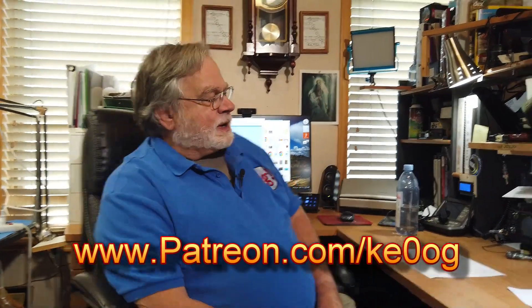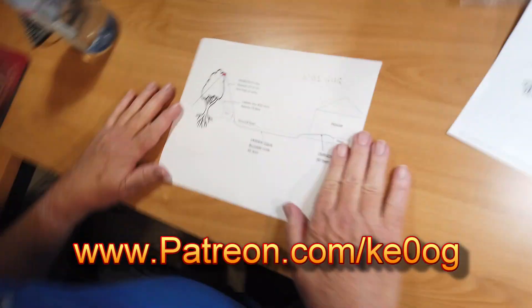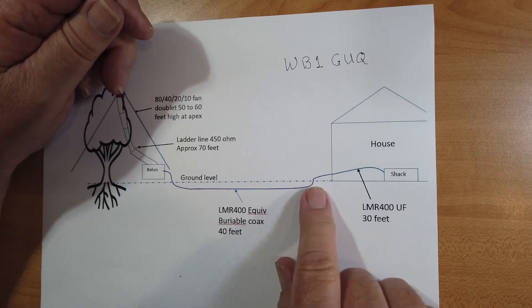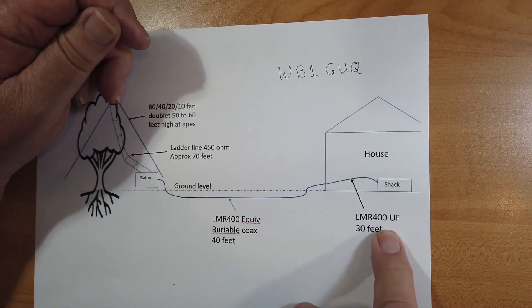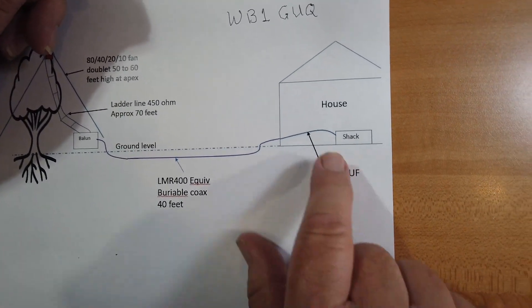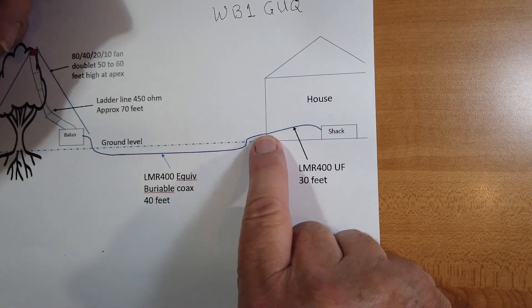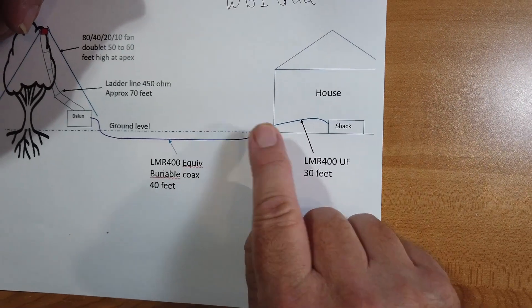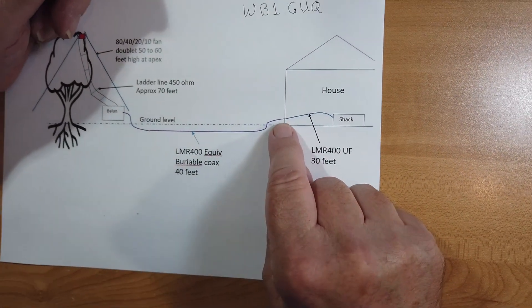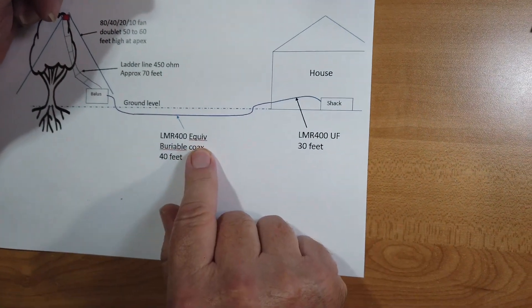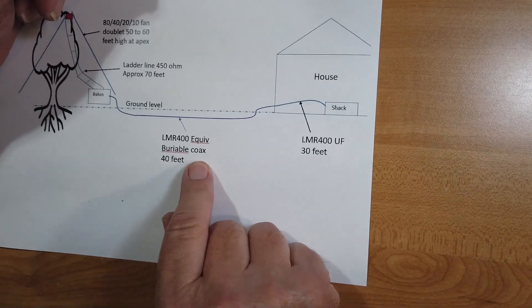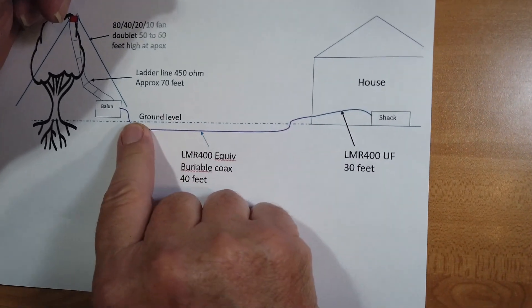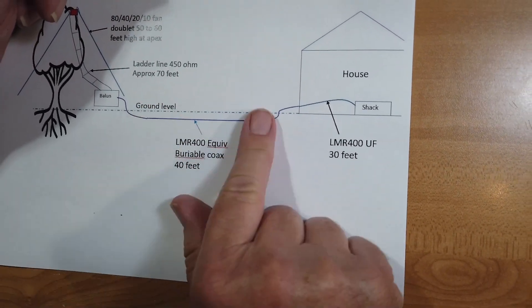So let's take a look at what he sent over here. We've got this printed out just a little bit bigger. He's got his house shack. He plans to use LMR400 ultra-flexible between here and the outdoors, and then there's going to have to be a barrel connector to attach this to the LMR400 or equivalent burnable coax. That'd be about 40 feet. So that'll be under the ground. Presumably, this is mowed grass here.